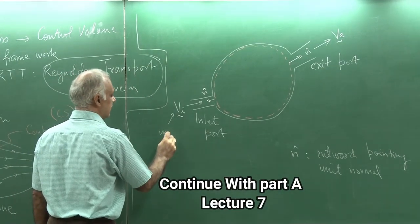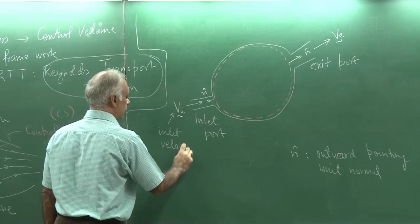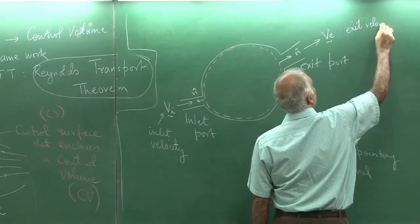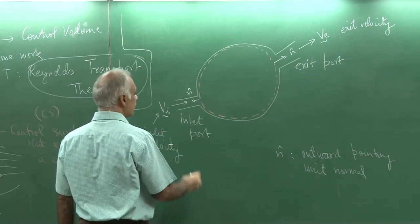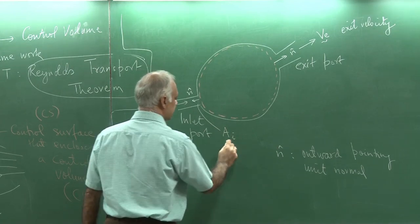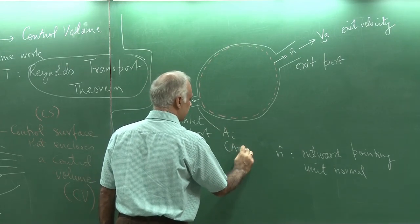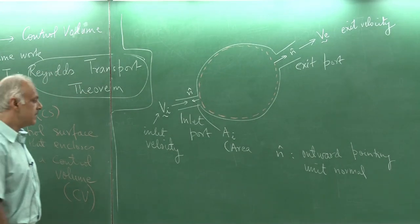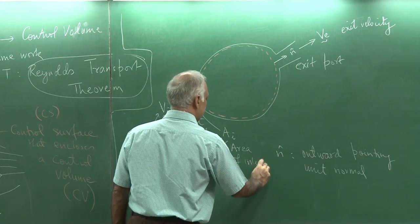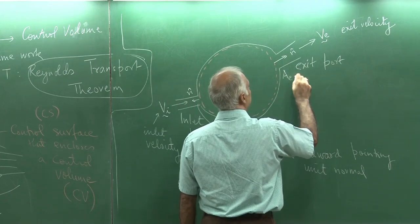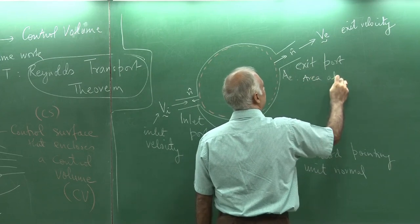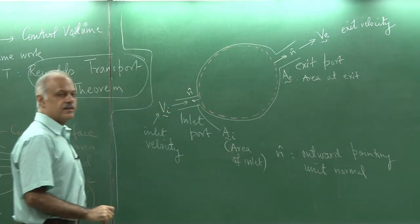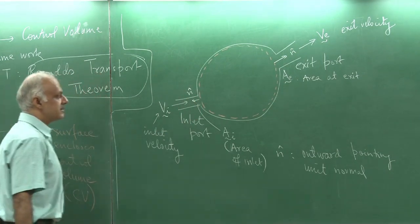This is inlet velocity and this is exit velocity. I am also going to assume that A_i is the area — so if this is a cylinder, a cylindrical cross section or any other shape — this is the area of inlet, and likewise A_e is the area at exit. In fact, I could use them as vectors if I say that it is area times the unit normal, then they become vectors.